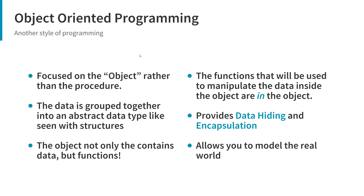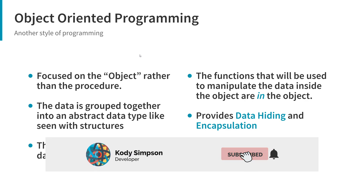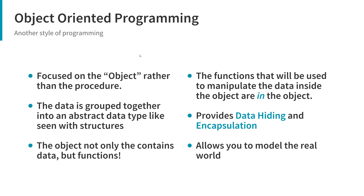An object is simply another data structure that we can use to make custom data types in our programs. In C++ it is almost identical to structures, but there are some important differences — especially in the way it is used. Objects and classes are used with object-oriented programming in mind, while structures are left for simpler data types. An object is unique in that it groups together data and functions into one entity. The functions inside the object are used to manipulate the data inside.